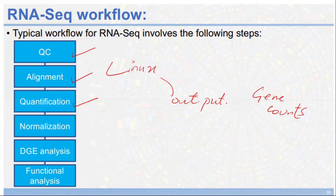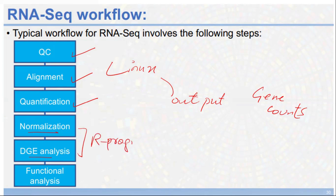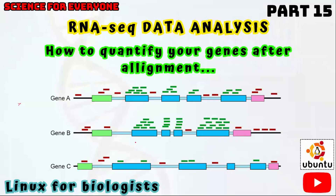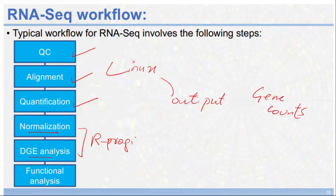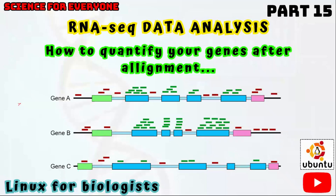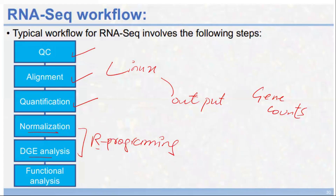The gene counts need to be analyzed because it's a huge matrix of 50,000-plus genes, and we have to explore it and extract useful information from it. This is a complete data analysis process — normalization and differential expression gene analysis will be performed through R programming. So after this video, we will be dealing with R programming.